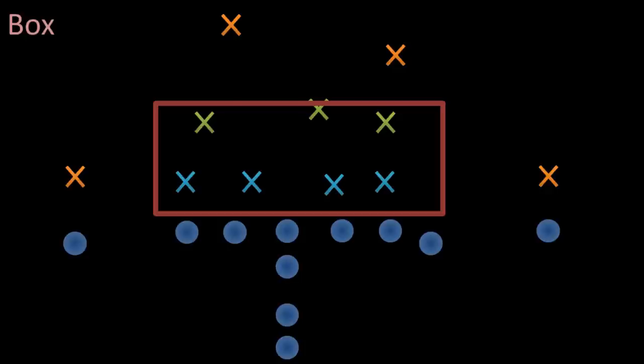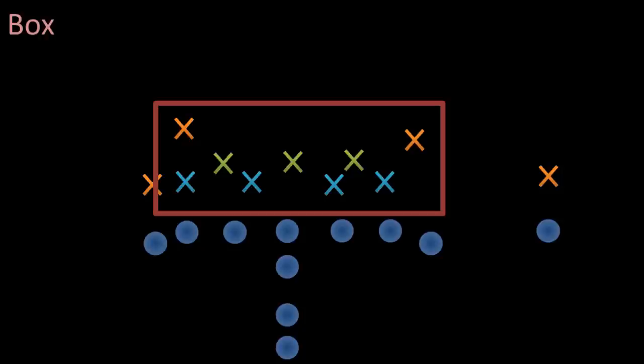When you'll most likely hear the announcer on TV make reference to the box, it'll be when they start adding or removing defenders from it. On plays close to a first down line or the goal line, you might see a team bring 10 guys into the box in an attempt to block up the middle of the field and make it very difficult to run against.